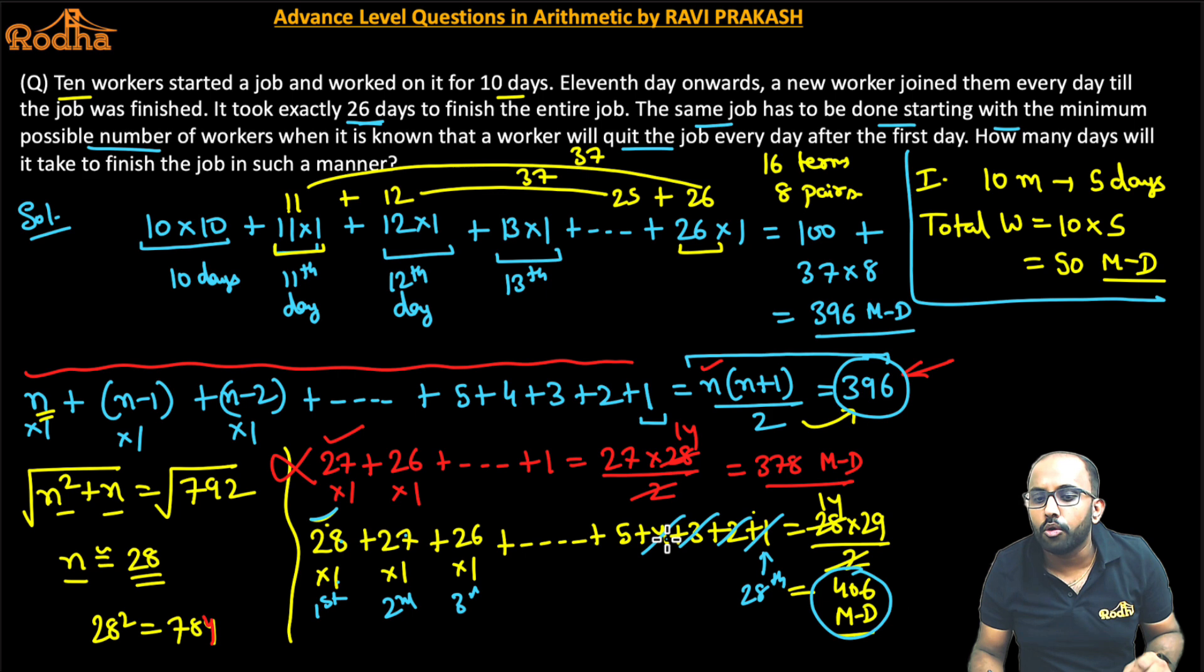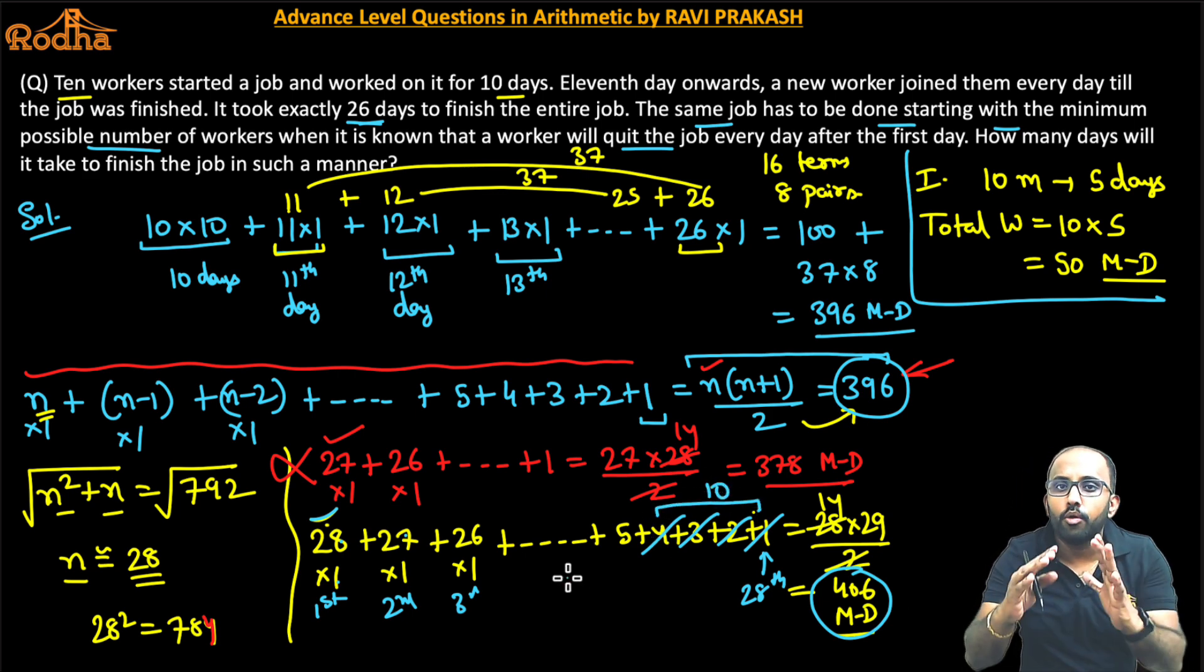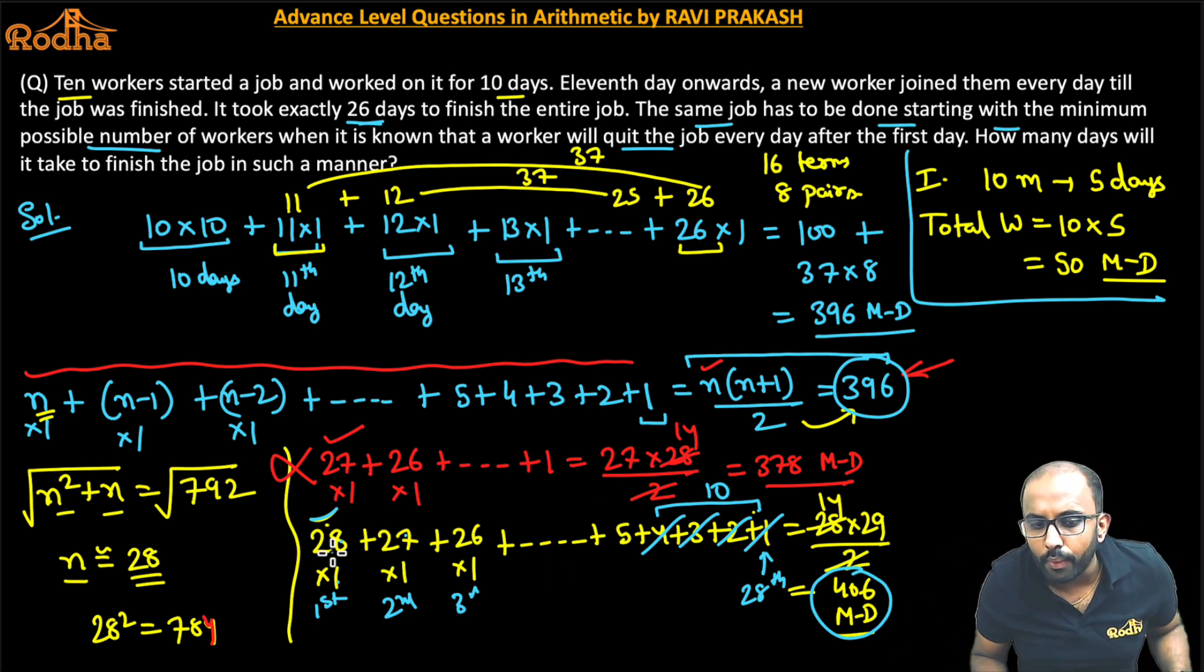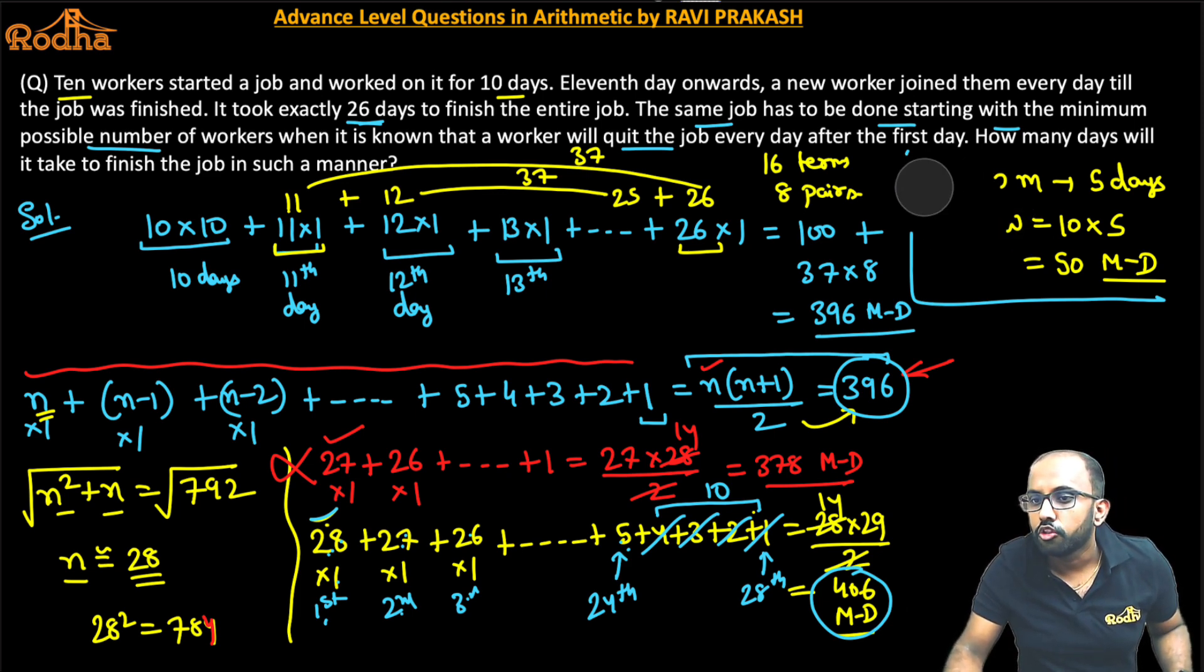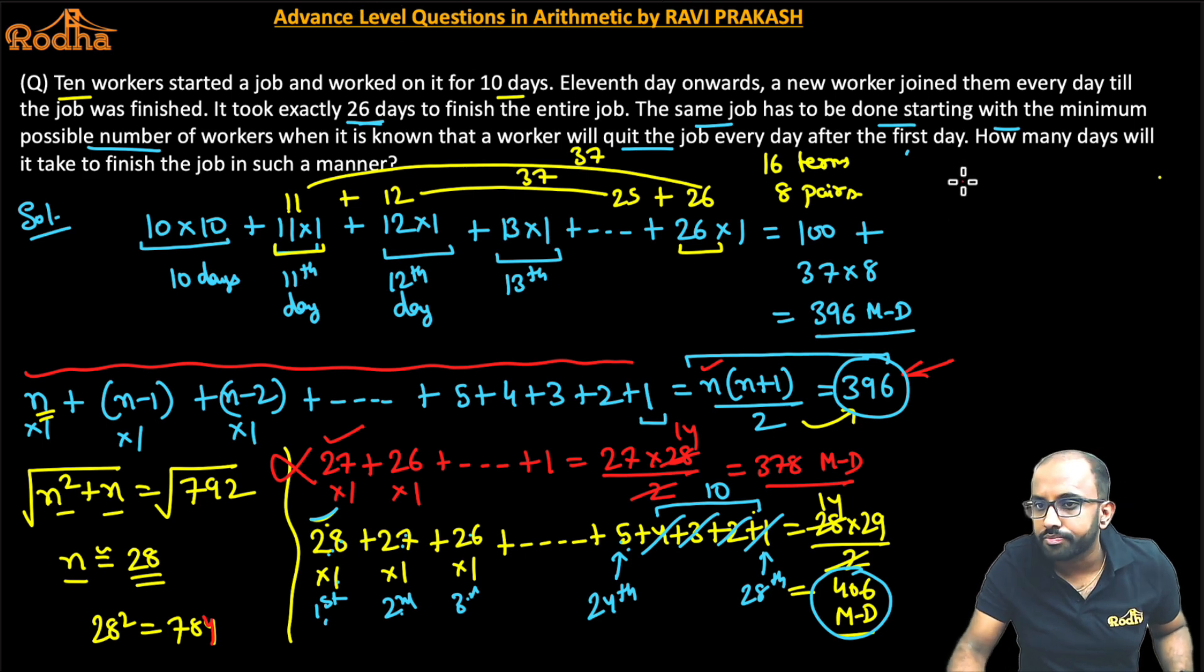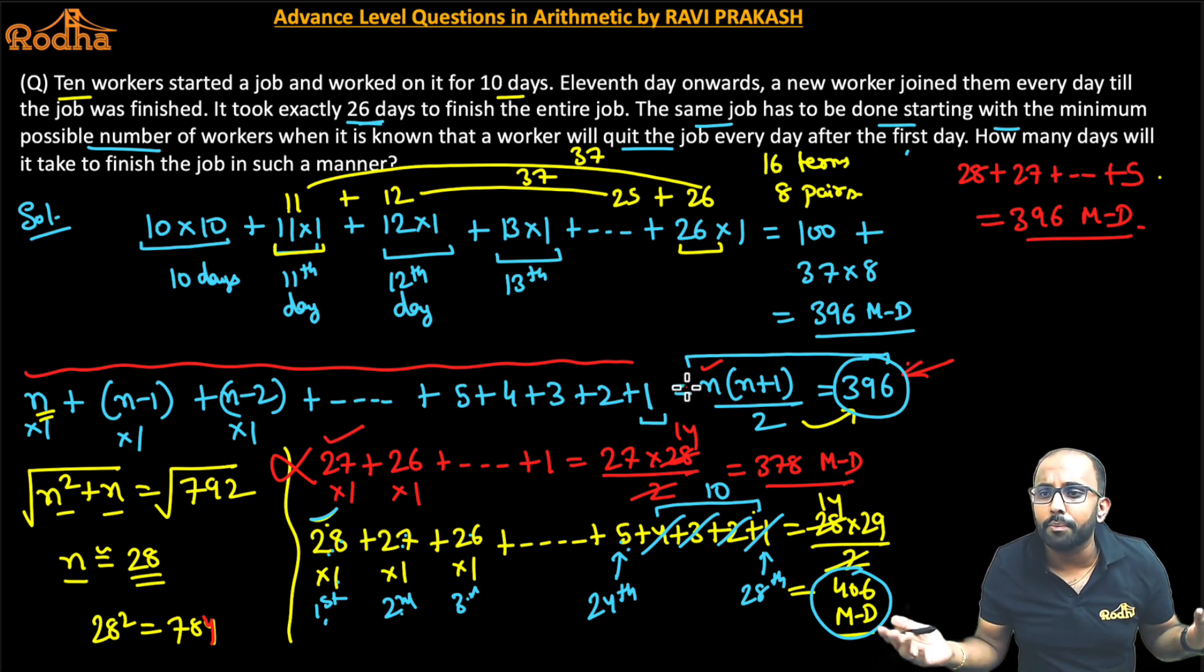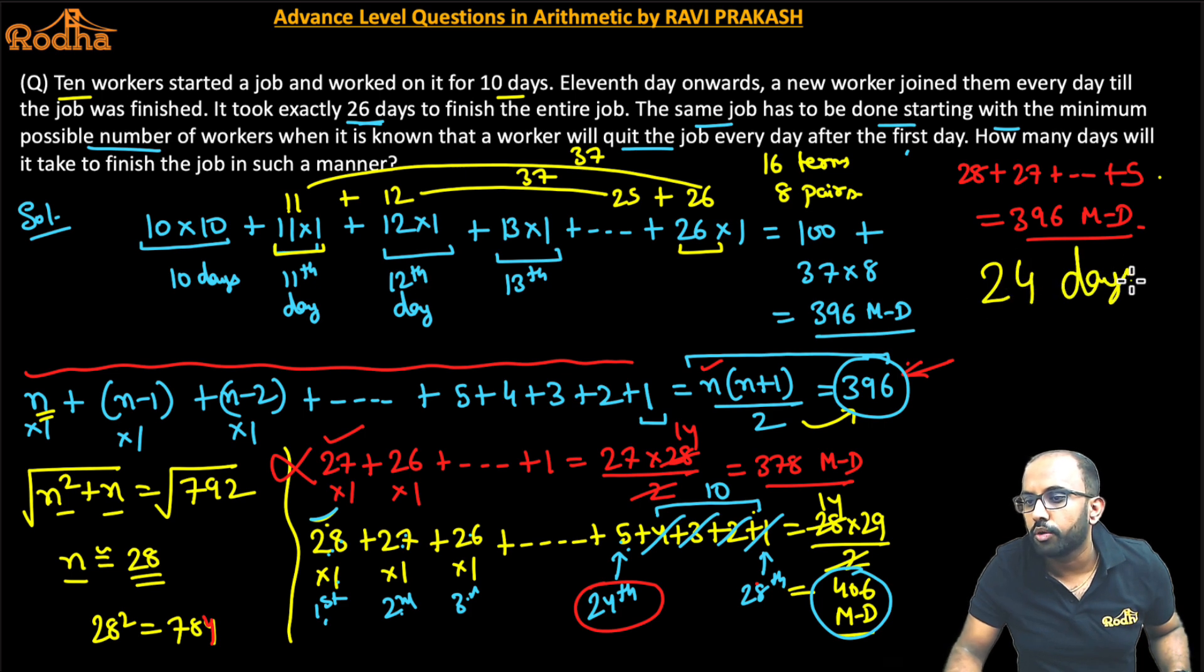This is equal to 29 into 14. So 29 into 14 is equal to 406. So you will say that 406 man-days have been done. So if 28 workers have started, we know that 28 workers have to start at minimum. But this work took 28 days. Because 28 workers, 1 day, this is the first day. This is the second day. This is the 28th day. But 28th day requirement is not there. Because our question is, we have to think about how many days it will finish. So we have to start with minimum workers. So the total work is 396 man-days. And we have 406 man-days. So 28 to 5 is the sum that equals 396. The answer for this question will be 24 days.